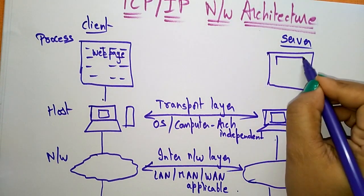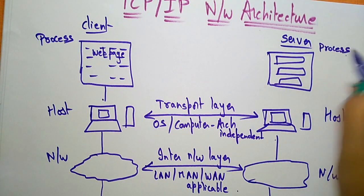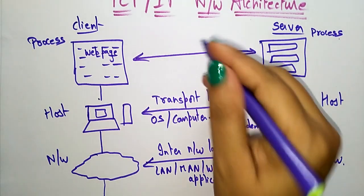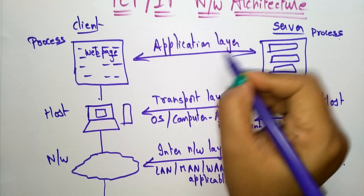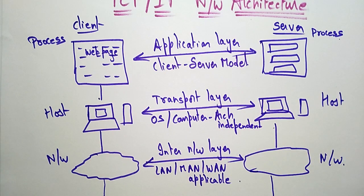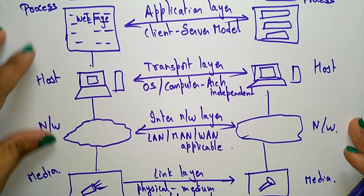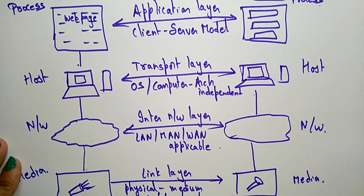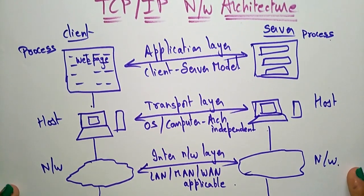Finally, the updated page will be opened on the server side. This is a process from the server side and this is a process from the client side. Communication between these two processes is called the application layer. This is the client-server model. So this is the TCP/IP network architecture — totally four layers: on each side there is a process, host, network, and media, corresponding to the application, transport, internet/network, and link layers.